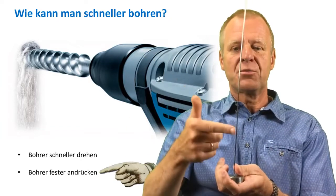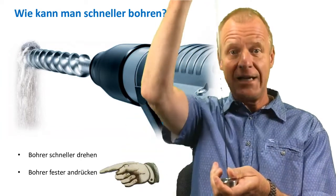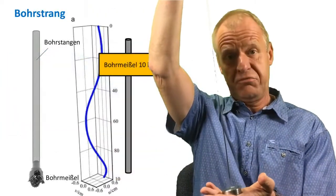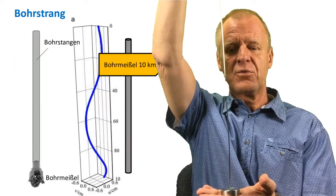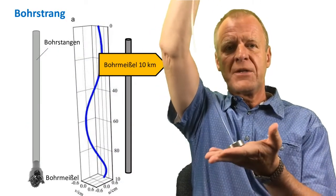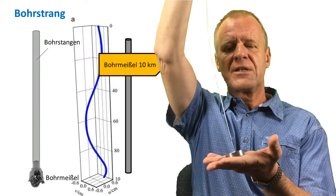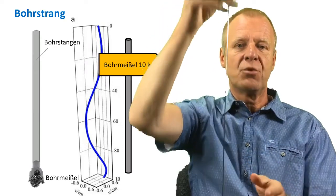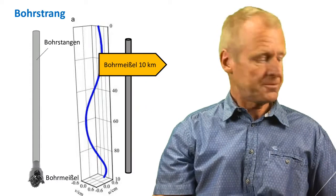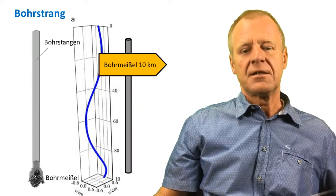This is not the case in deep drilling technology because the drill pipe is very slim and very long, 10 kilometers or more, just like the model we have here. If you apply pressure from above you see that the drill string will buckle and you also have crooked holes.